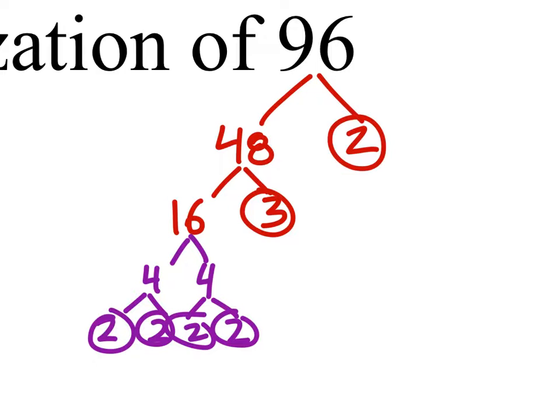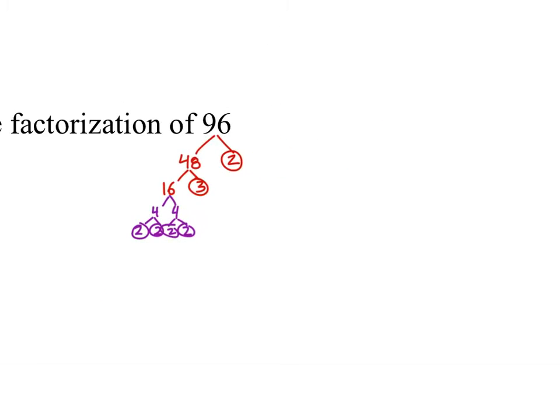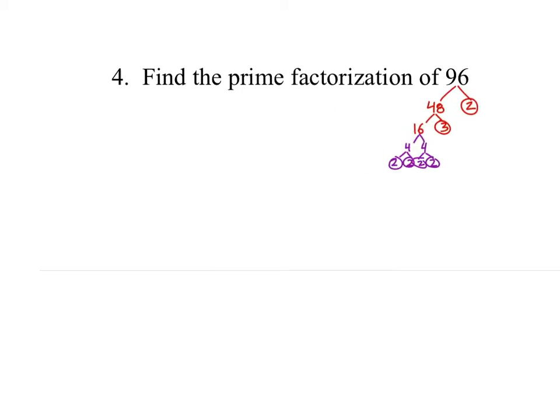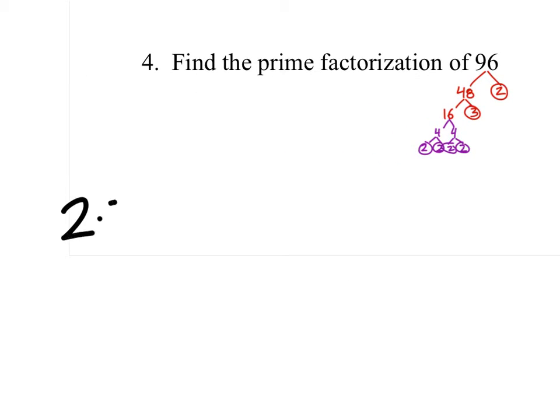So, there is our prime factorization, all the circled numbers. Now these are all being multiplied together, so in this problem we would write 2 times 2 times 2 times 2. We had 5 2's and a 3.